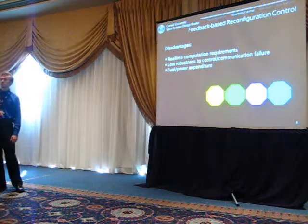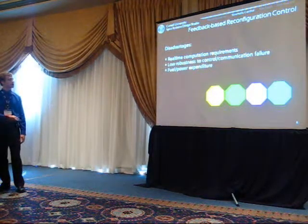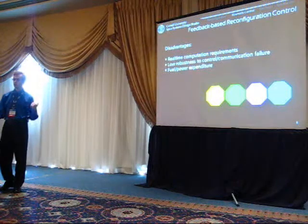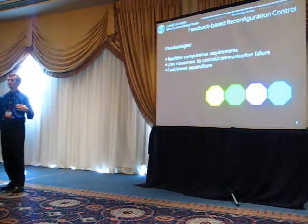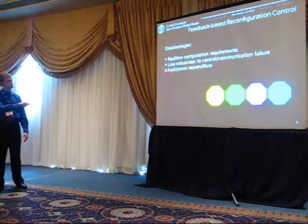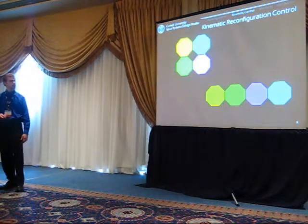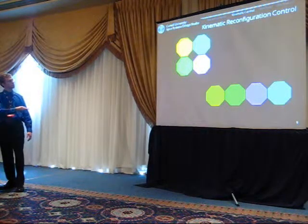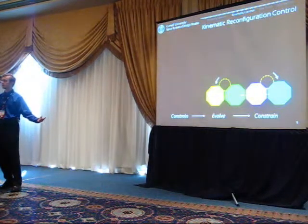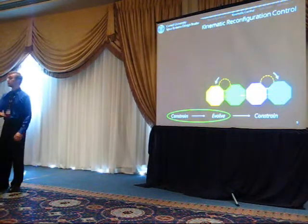I contend that this has disadvantages: there are a lot of real-time computation requirements for multi-body control, path planning, and obstacle avoidance. It has low robustness to controller communication failures — work on the MIT SPHERES project typically has spacecraft communicating states between each other, and if that link doesn't work you might have collisions. You may also expend a lot of propellant and power. So the concept we proposed is: what if instead we constrain the bodies, allow them to evolve, then constrain them again in the final configuration once that dynamic evolution is complete? If we didn't get all the way to our final configuration, we repeat the constraining and evolving until we get where we want to go.